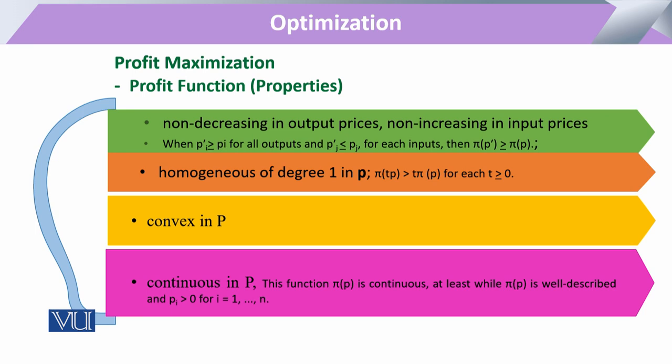The first property of the profit function is that in response to output prices, it will always be non-decreasing — in other words, the profit function will always have a positive slope for output prices. However, for input prices, it will be non-increasing, meaning it will decrease.